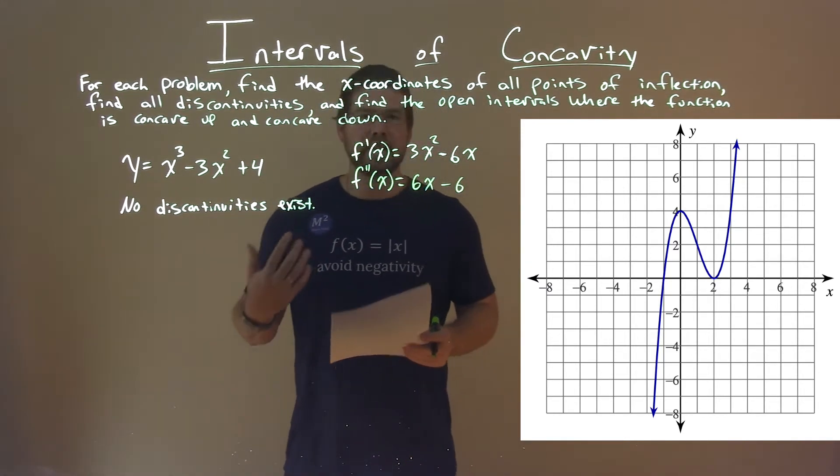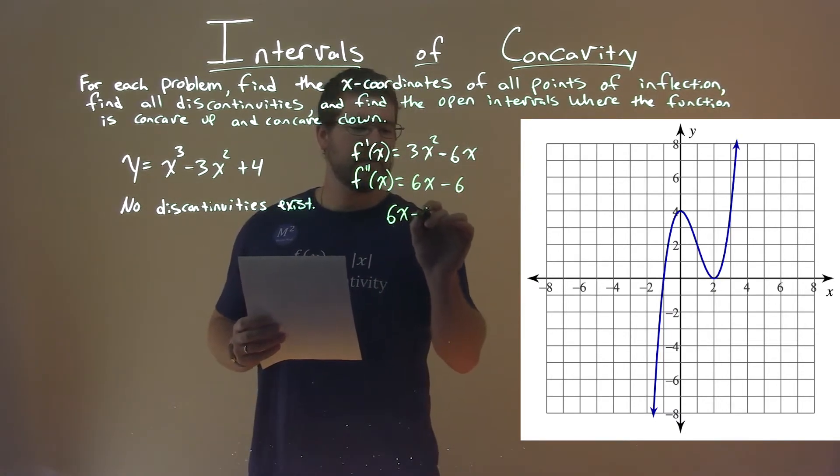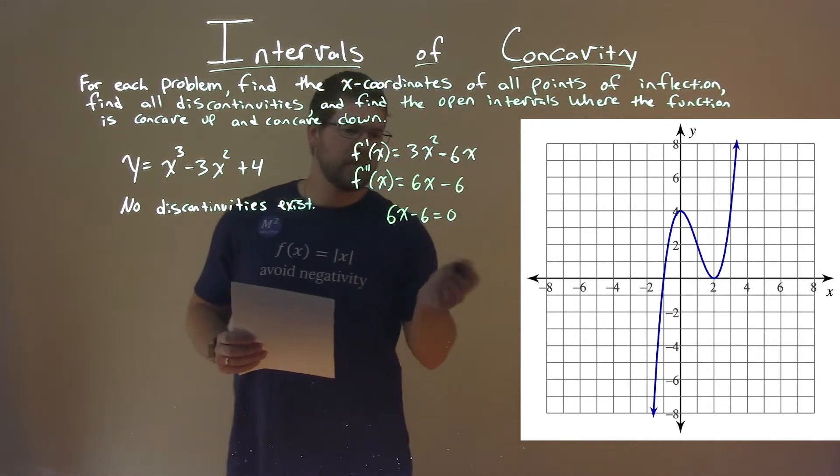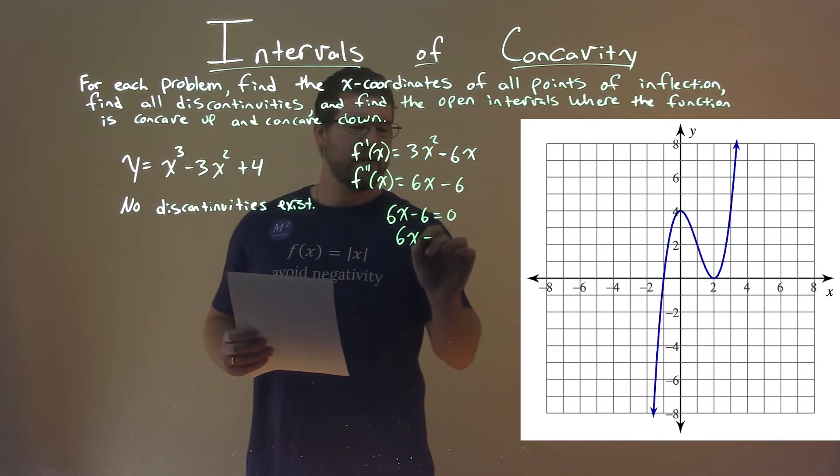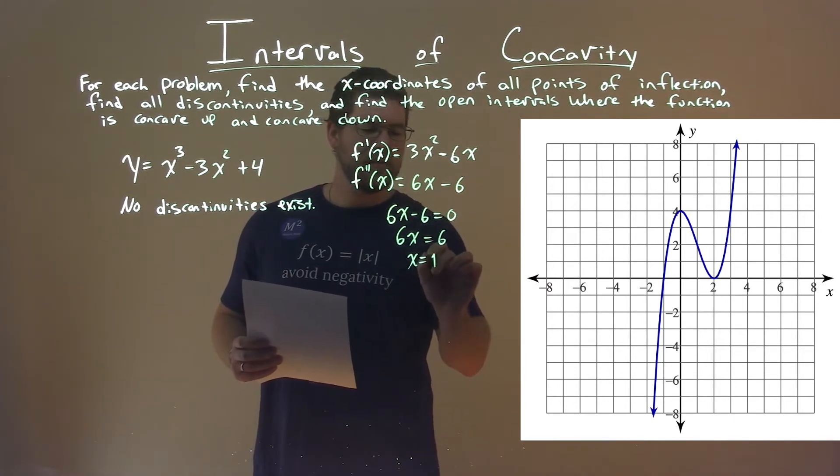We now have to take the second derivative, set it equal to 0. 6x minus 6 equals 0, and we're solving for x. Add 6 to both sides, 6x equals 6, divide both sides by 6, and x equals 1.